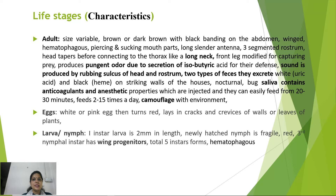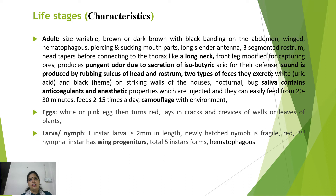Adult kissing bugs are variable in size, brown to dark brown with black banding on the abdomen. They have a three-segmented rostrum, long cylindrical antennae, piercing and sucking mouthparts, and a head that tapers before connecting to the thorax, giving a long-neck appearance. The front leg is modified for capturing prey. They produce a pungent odor due to isobutyric acid secretion and sound by rubbing the sulcus of the head and rostrum. Their excreta is white when unfed and black after a blood meal, forming striking patterns on house walls.